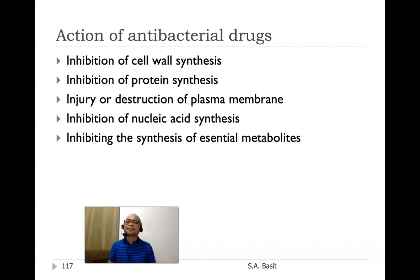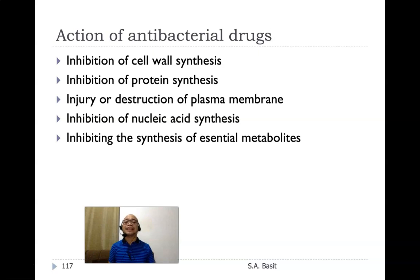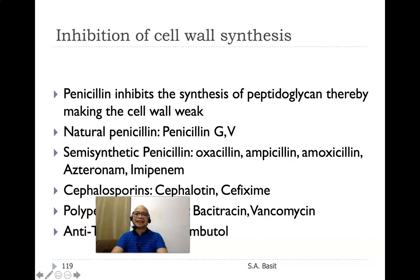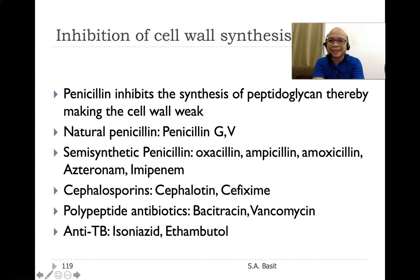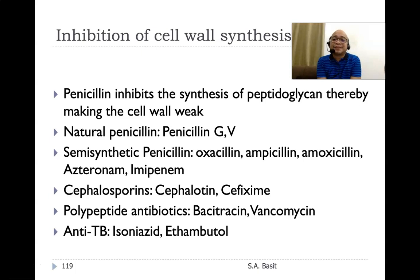Let's discuss antimicrobial drugs that inhibit cell wall synthesis. Penicillin inhibits cell wall synthesis by disrupting the synthesis of peptidoglycan, making the cell wall weak. Natural penicillin includes penicillin G. Nowadays we have semi-synthetic penicillins such as oxacillin, ampicillin, amoxicillin, aztreonam, and imipenem. Cephalosporins include cephalothin and cefixime. Polypeptide antibiotics include bacitracin and vancomycin. Anti-TB drugs include isoniazid and ethambutol.